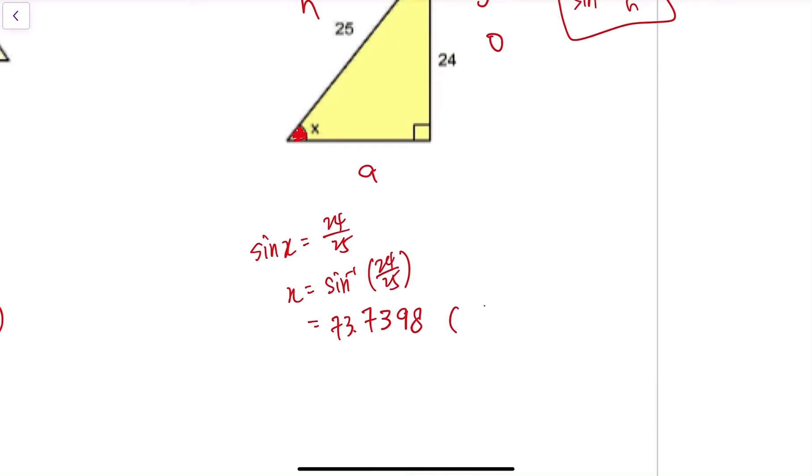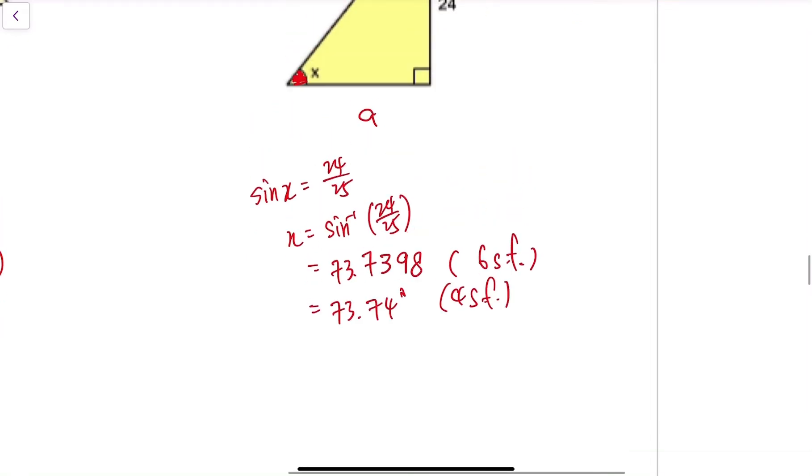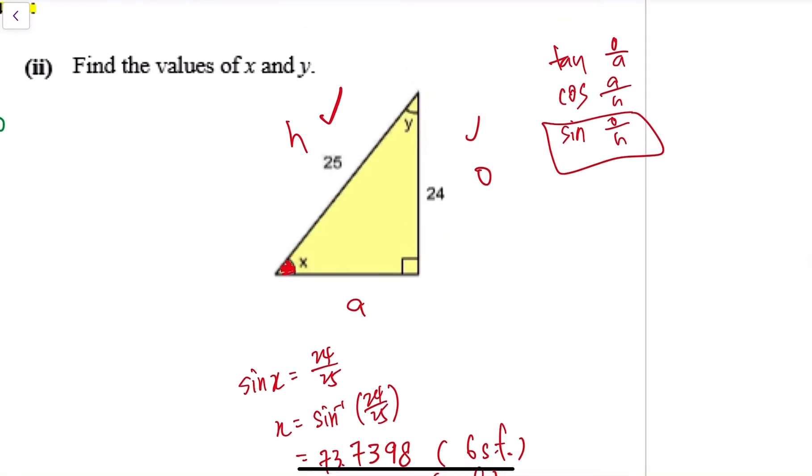And this will be six significant figures, and I have to change it to 73.74 degrees for four significant figures. A natural way would be taking 180 minus 90 minus this, but for the sake of practice, I'm going to use trigonometry one more time.